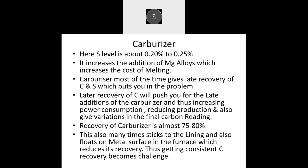Let us start with carburizer. Carburizer has a sulfur level of about 0.2 to 0.25%, which increases the magnesium alloy addition and thus increases the cost of melting. Carburizer most of the time gives late recovery of carbon and sulfur, which creates problems. Late recovery of carbon pushes you toward late addition of carburizer, thus increasing power consumption, reducing production, and giving variation in the final carbon reading.